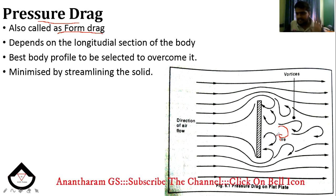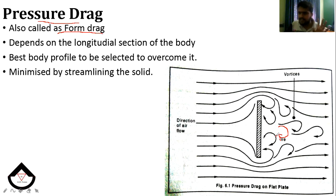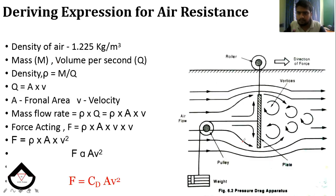Now let us look at the air resistance expression. Air resistance — the density of air is 1.225 kg per meter cube.